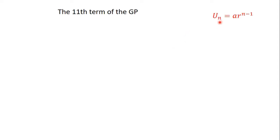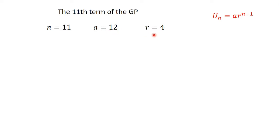The next part of the question says we should find the 11th term of the GP. The value of a term in a GP is denoted by uₙ and is given by the formula a·rⁿ⁻¹, where a is the first term, r is the common ratio, and n is the number of the term. We want to find the 11th term, so n is equal to 11. We have found that a is equal to 12 and r is equal to 4.